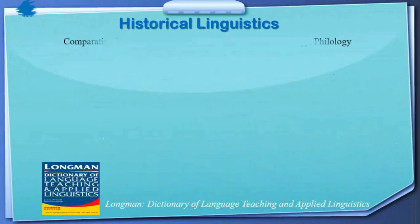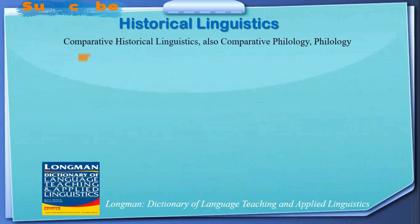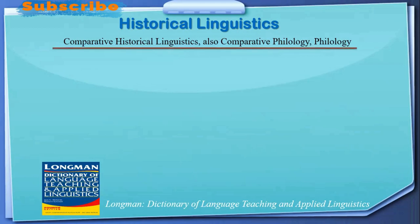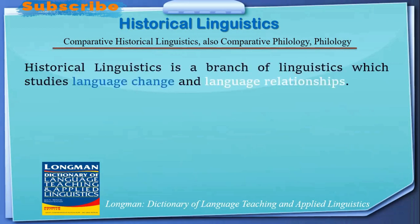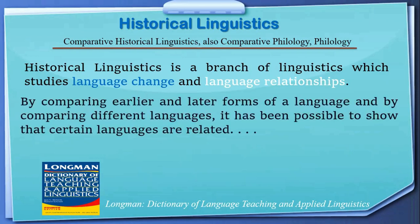Here is the definition from the book Longman Dictionary of Language Teaching and Applied Linguistics. Historical linguistics — we also call it comparative historical linguistics, comparative philology, or simply philology. These are some of the possible names of historical linguistics. Historical linguistics is a branch of linguistics which studies language change and language relationships, comparing earlier and later forms of language and comparing different languages to show that certain languages are related.